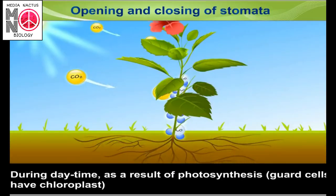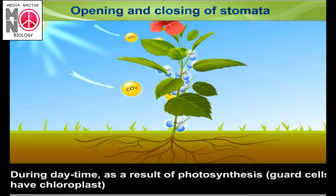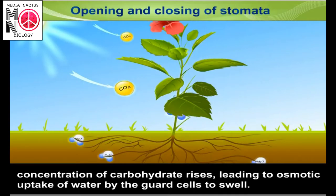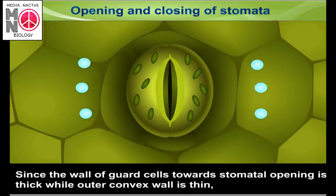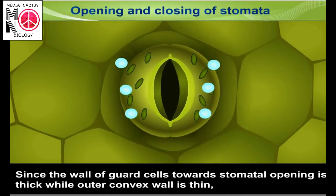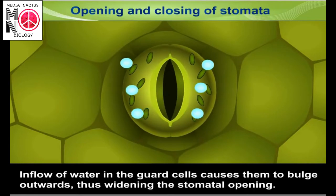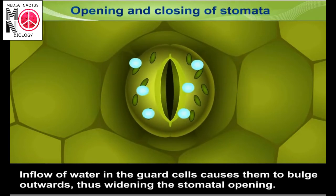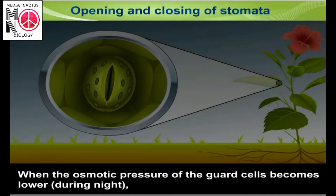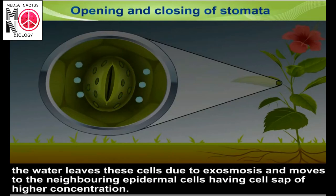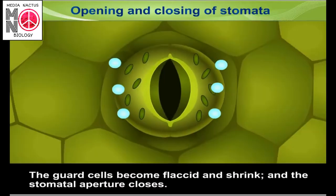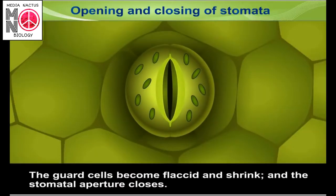During daytime, as a result of photosynthesis, and because the guard cells have chloroplasts, the concentration of carbohydrates rises, leading to osmotic uptake of water by the guard cells, causing them to swell. Since the wall of guard cells towards the stomatal opening is thick while the outer convex wall is thin, the inflow of water causes them to bulge outwards, widening the stomatal opening. During night, when osmotic pressure of guard cells becomes lower, water leaves through exosmosis to neighboring epidermal cells, the guard cells become flaccid and shrink, and the stomatal aperture closes.